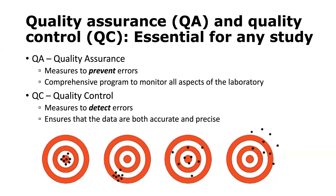No matter what type of study you're engaged in, quality assurance and quality control are essential components for monitoring programs or research projects. QA and QC are related but different from each other. QA — quality assurance — is where you implement measures to prevent errors from happening. It's a comprehensive program that involves monitoring all aspects of the laboratory. Quality control, on the other hand, involves measures implemented to detect errors or mistakes. It ensures that the data are both accurate and precise.